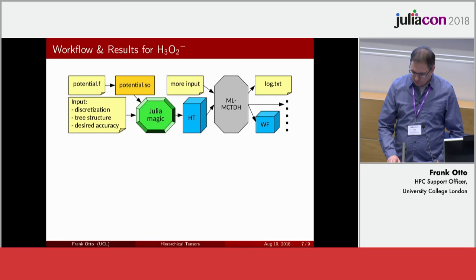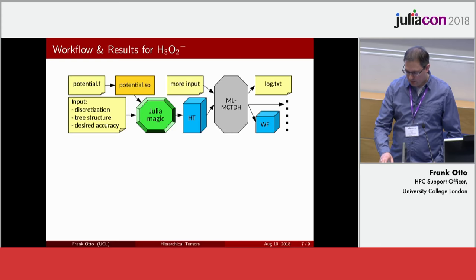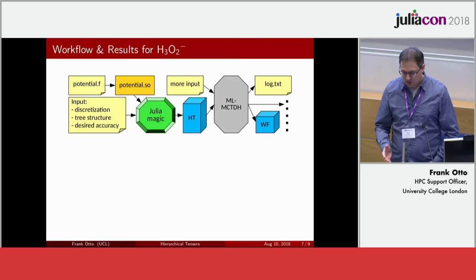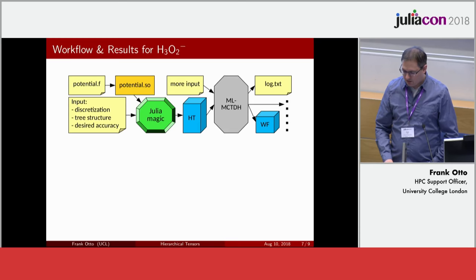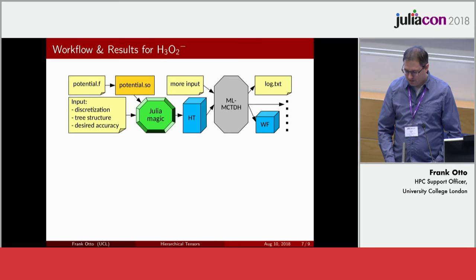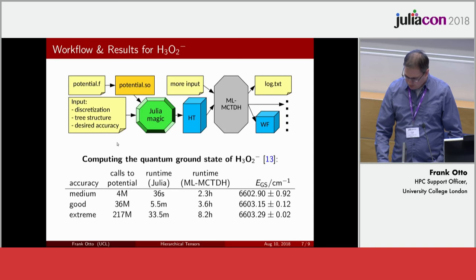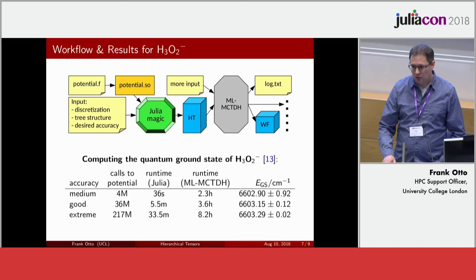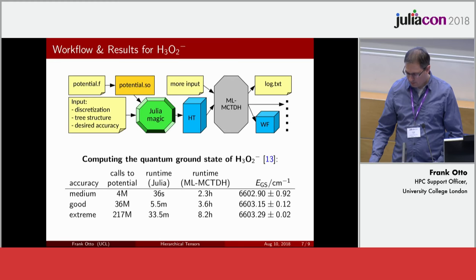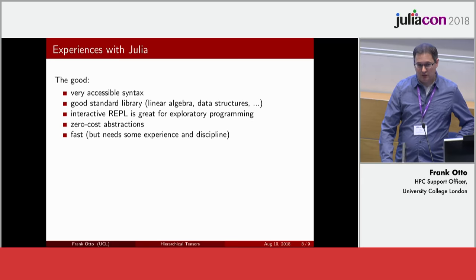Briefly showing how the Julia code fits into the scientific workflow: I start from a potential function given as Fortran source code, compile it to a shared library, provide input parameters for how to discretize the grid, how to organize the tree structure, and the desired accuracy, then run Julia. I get a binary file which is the hierarchical tensor, feed that along with some additional input data into the quantum dynamics code, which consumes the hierarchical tensor and outputs a wave function and output data. The Julia code runs really very fast on a single core of a laptop, and this enabled us to run quantum dynamics calculations much more efficiently than was previously possible.